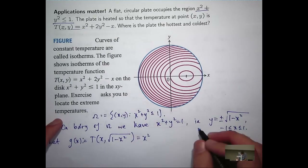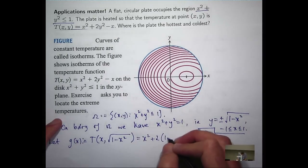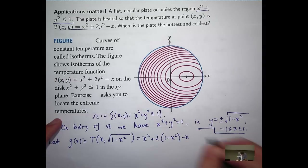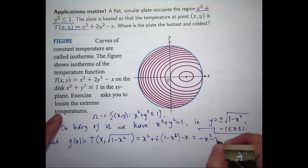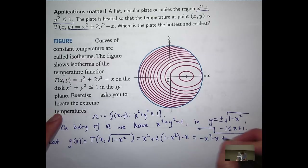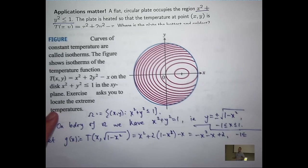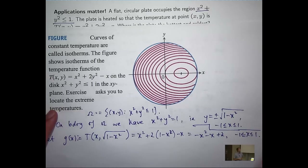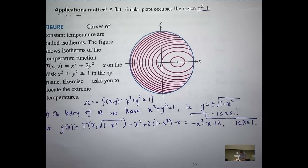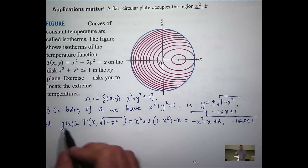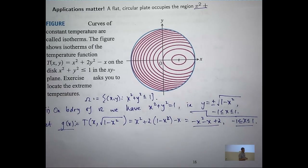When I substitute this in for y, that square root is going to disappear and I'll get something like this. After cleaning up the algebra, g of x is just a parabola on the interval minus one to one.